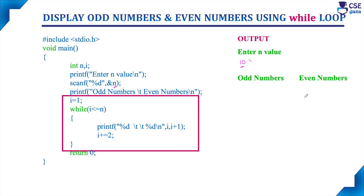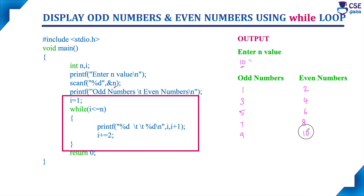If you are considering up to the value 10, odd numbers are 1, 3, 5, 7, and 9. And even numbers are 2, 4, 6, 8, and 10. So this output we are going to display with the help of this while loop.